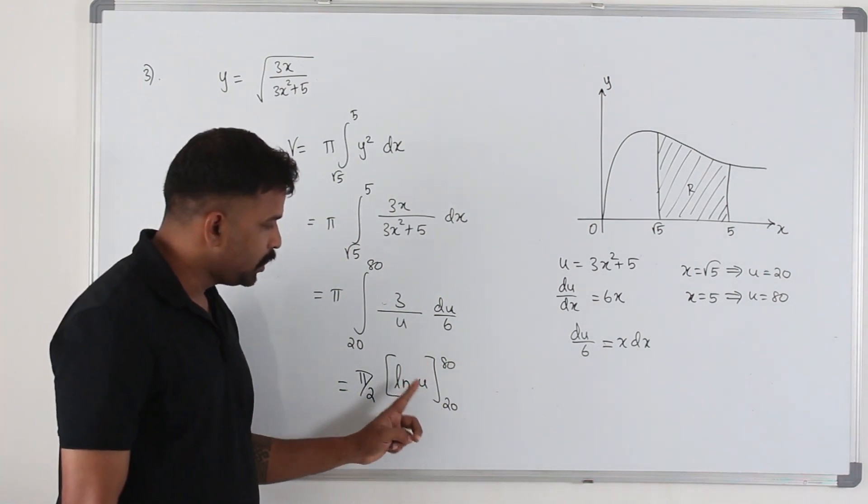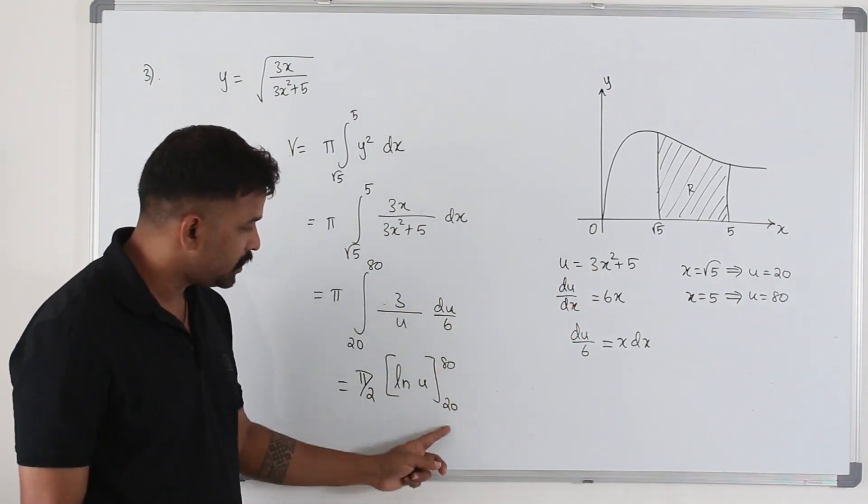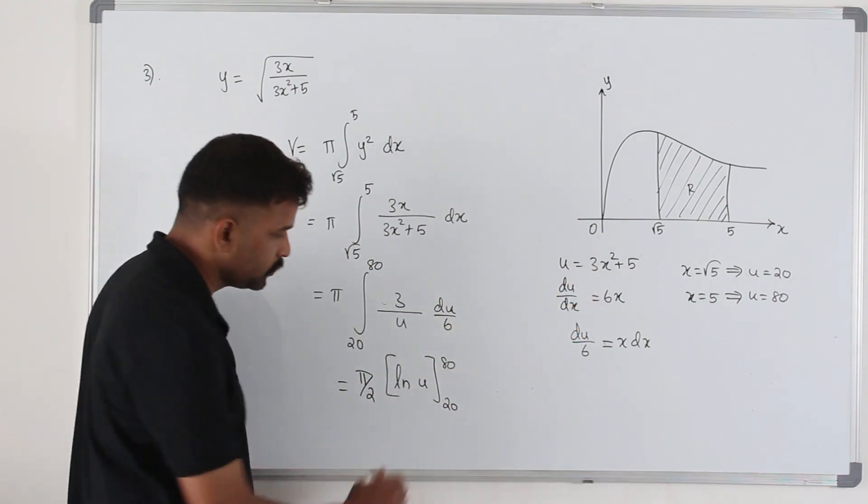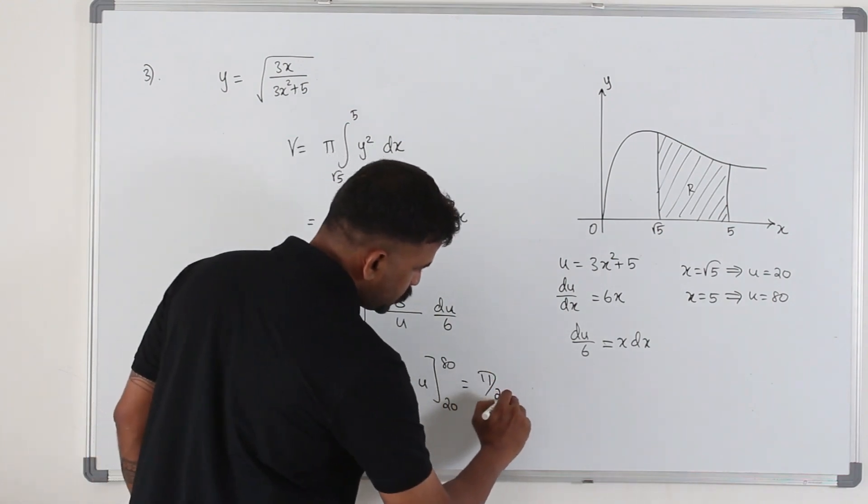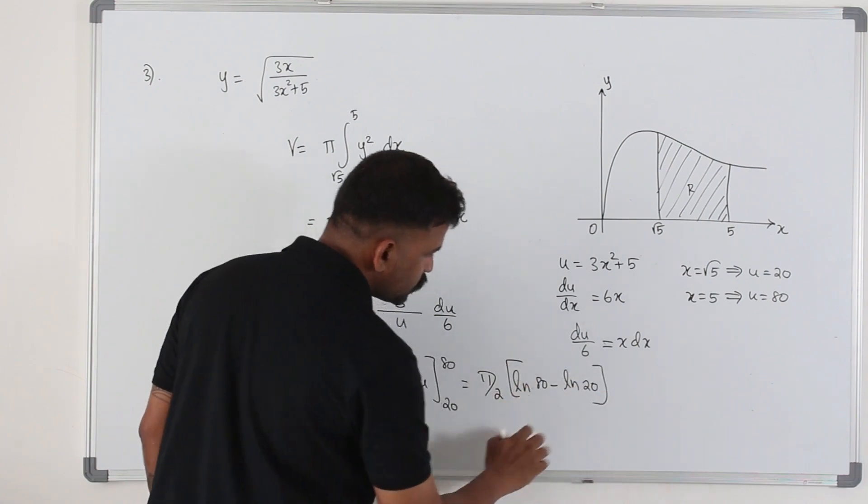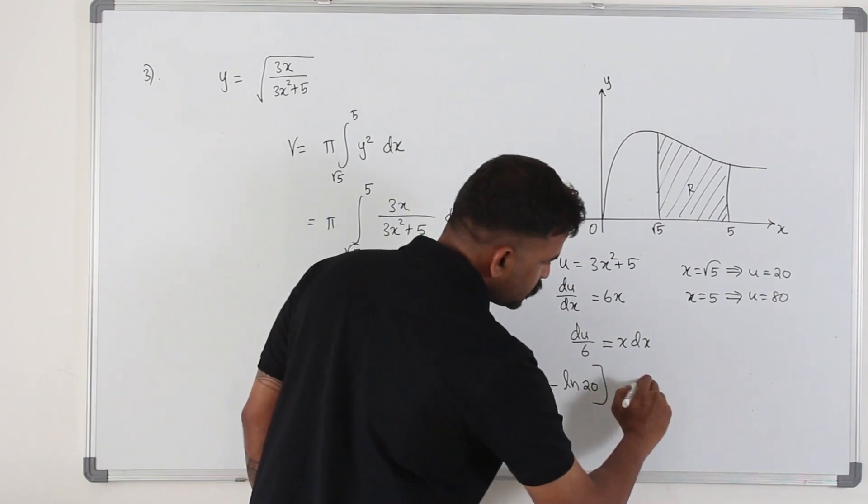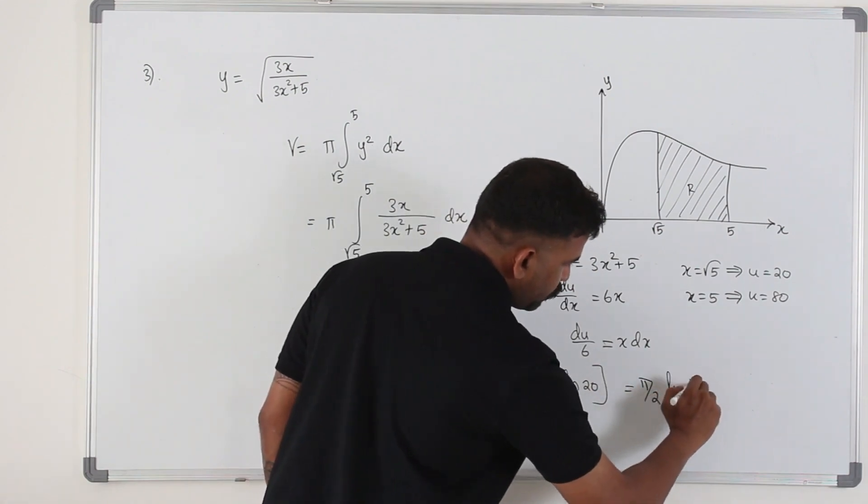Sub in the upper limit. Do not replace u back to this because we have changed the limit already. These limits are meant for u now. So it's pi over 2, ln 80 minus ln 20. So it's going to be ln 80 over 20 is ln 4. The answer is pi over 2 ln 4.